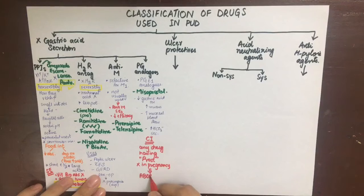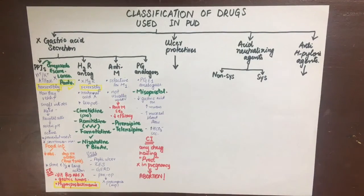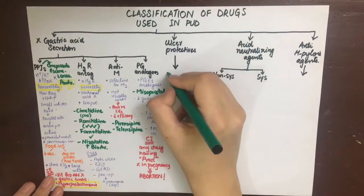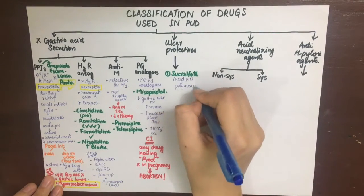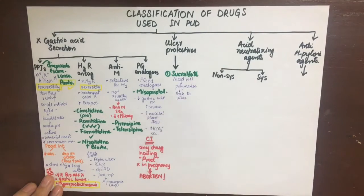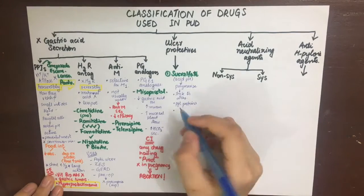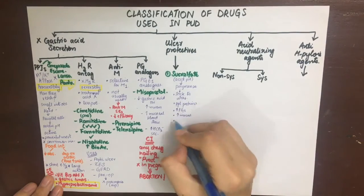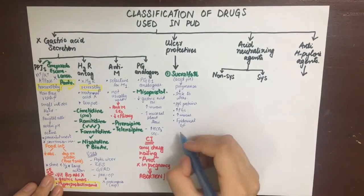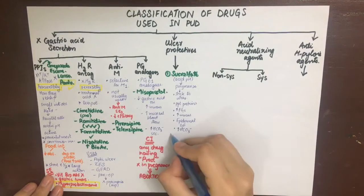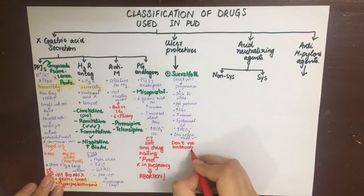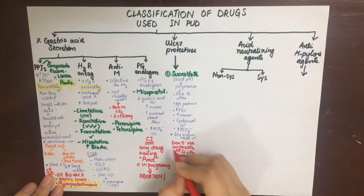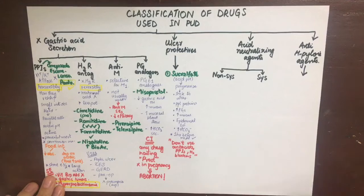Ulcer protective drugs: first is sucralfate. In the acidic pH of the stomach it polymerizes to form a sticky polymer that adheres to the ulcer base to protect it. It also precipitates proteins at the site to wall off the ulcer from further damage, increases prostaglandin release, mucus release, releases epidermal growth factor, and increases bicarbonate secretion. It should be taken one hour before meals. Antacids, H2 blockers, and PPIs should not be used along with sucralfate because it needs acidic pH to work.